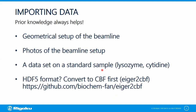Prior knowledge is always going to help you move forward. Do you know the geometrical setup of the beamline you used? Do you have photos of the beamline setup if you don't know the setup? Do you have a data set on a standard sample collected at the same time you ran your experimental samples? Good standards: lysozyme, cytidine — both really good. If you use an Eiger detector, are your images in the HDF5 format? Currently CrysAlis Pro does not import from that image file format, and you will have to convert to CBF files first. There are converters available.